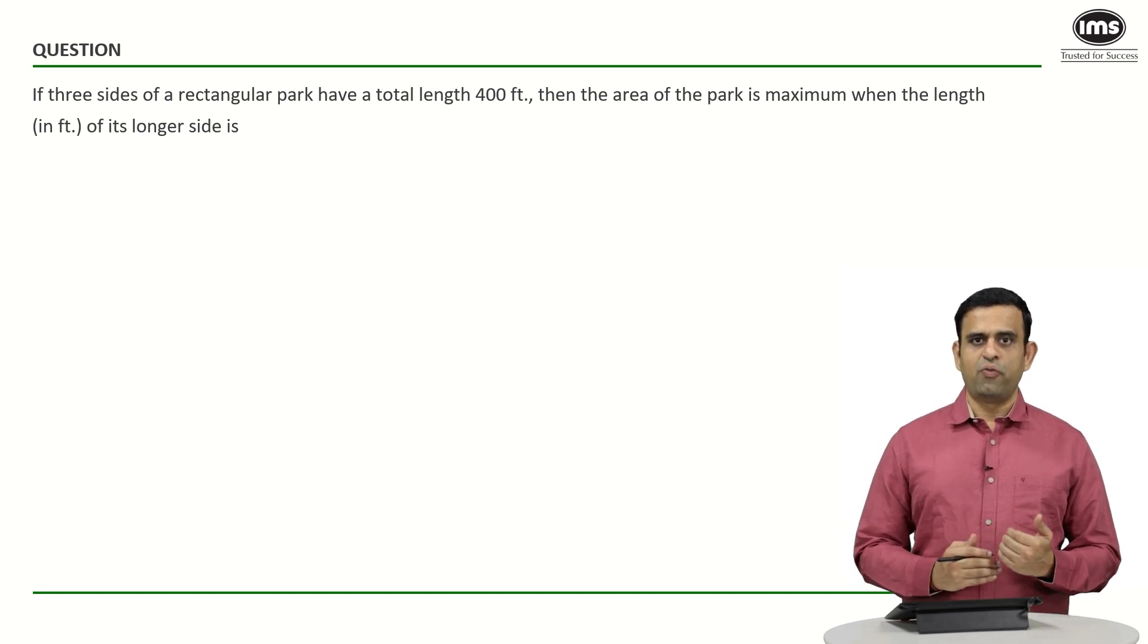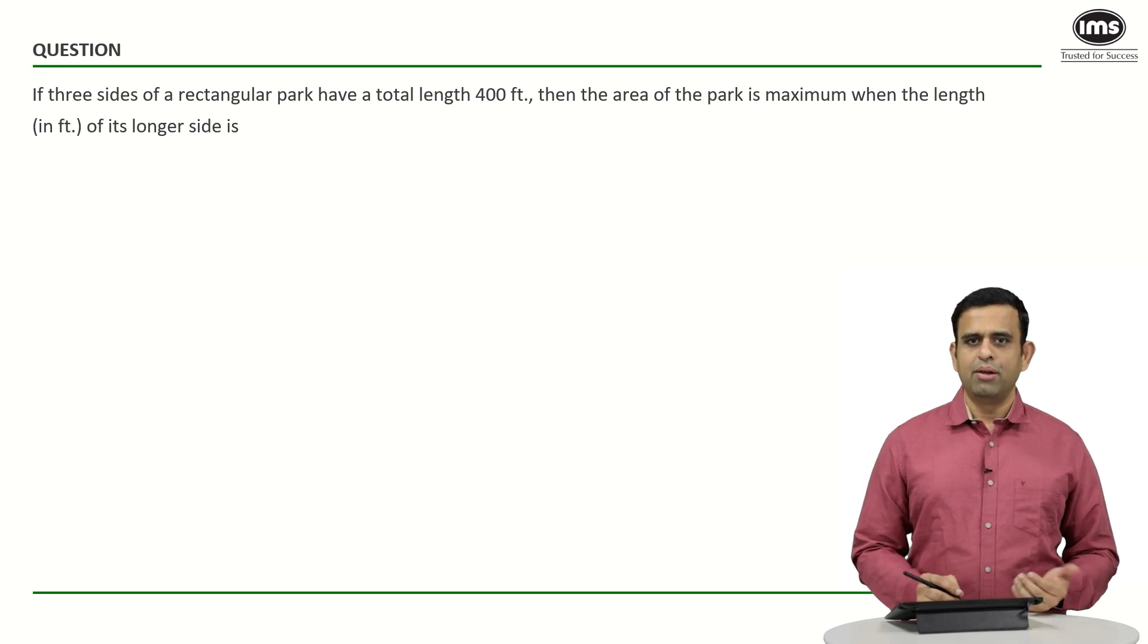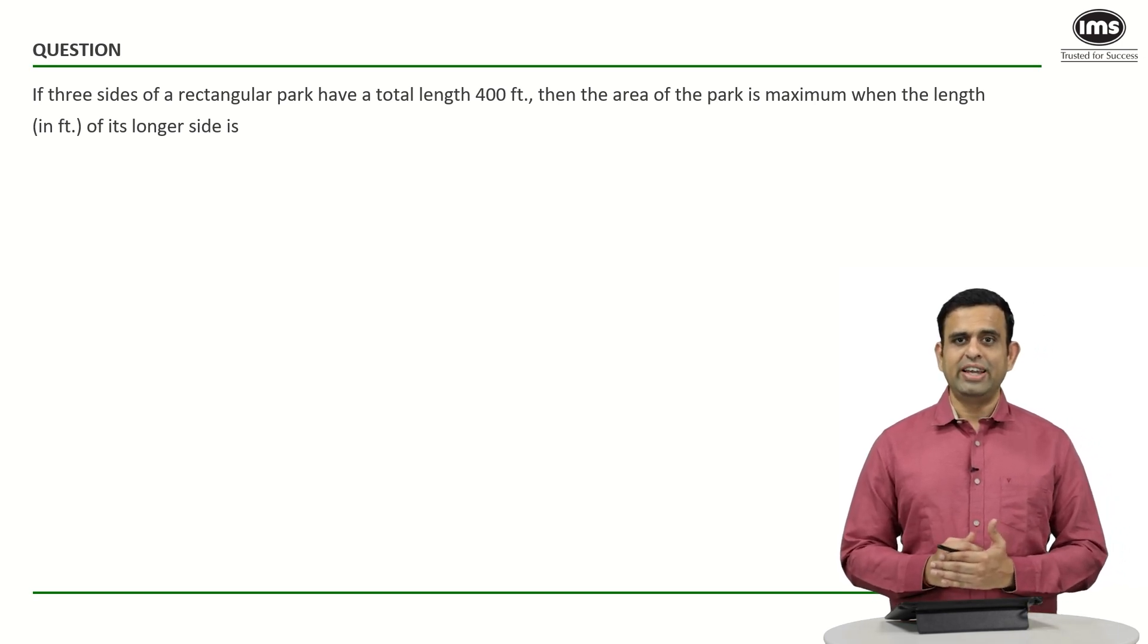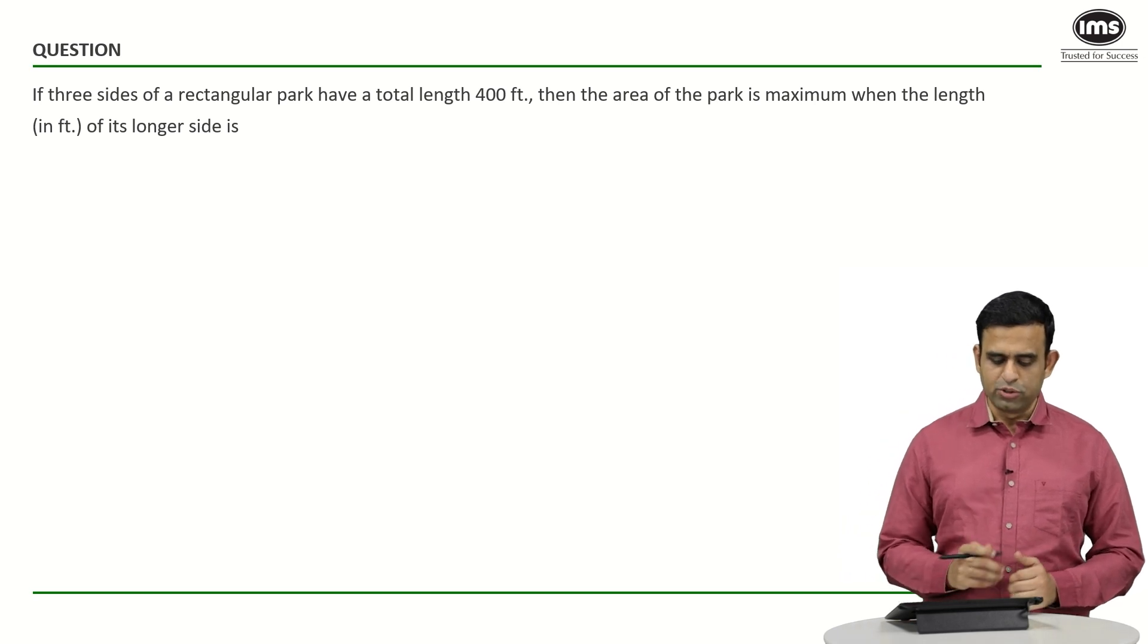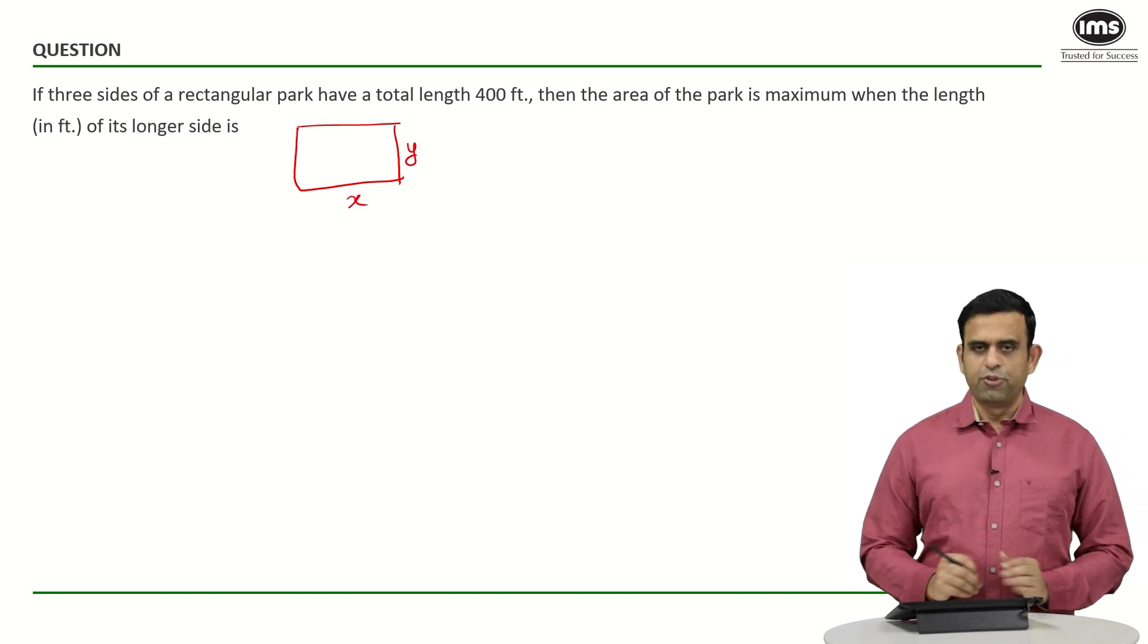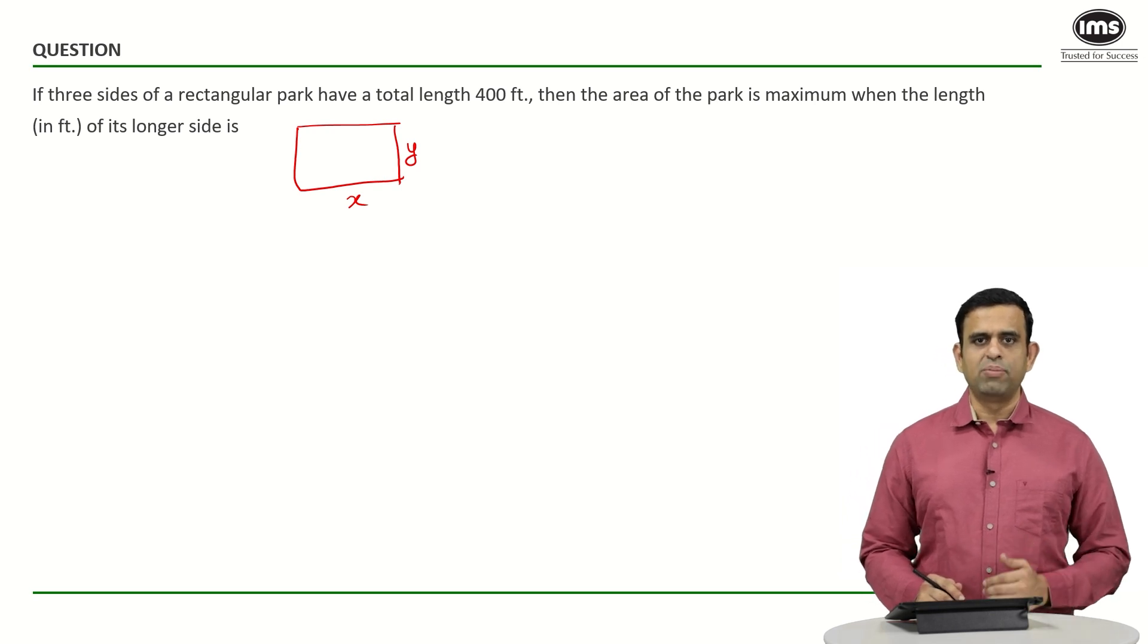Let's look at a couple of ways to solve this particular sum. I will not call this to be geometry, but more algebra because we have to maximize the area. So suppose we have a rectangle with dimensions x and y. Now what is 400? I don't know. It could be 2x plus y, or 2y plus x.